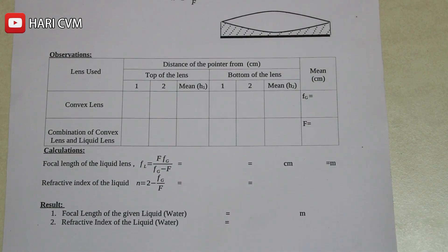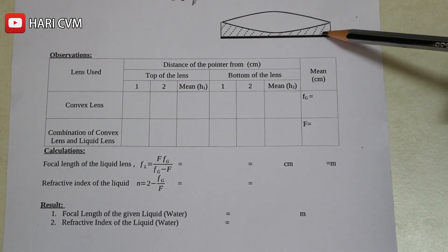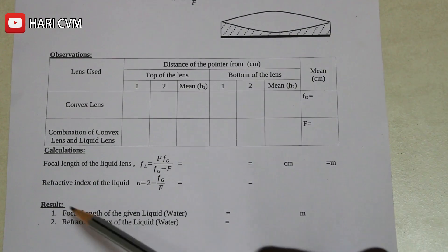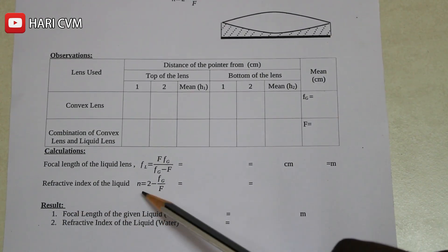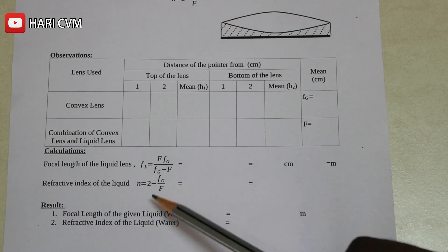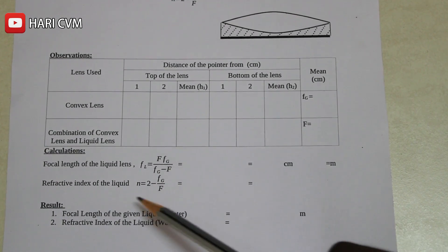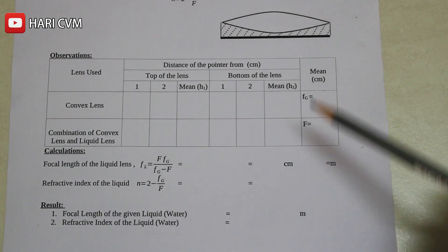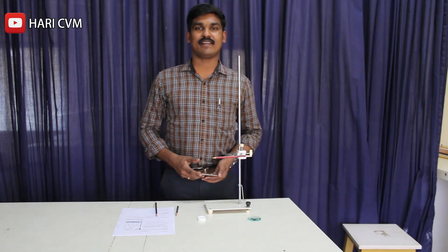Here, this one is A. The liquid lens uses water as the liquid. Water has a refractive index, because we have the equation: refractive index n is equal to 2 minus Fg by F. This equation will give the refractive index of water. We will do the experiment.